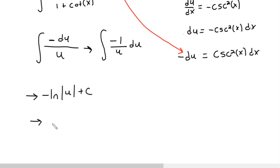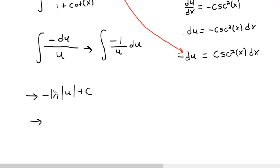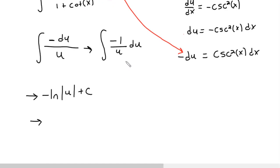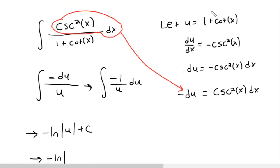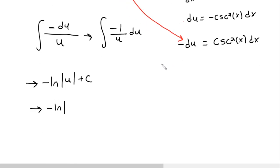Now, what do we do? Remember, we started with x's, so our answer must be in x's as well. Instead of u, I'm going to make it in terms of x's. What was u? u was just 1 plus cotangent of x. So instead of u, I put 1 plus cotangent x, giving: negative natural log of the absolute value of (1 plus cotangent x) plus c.